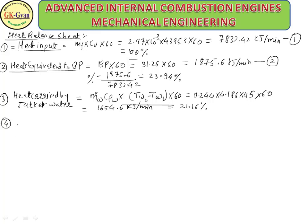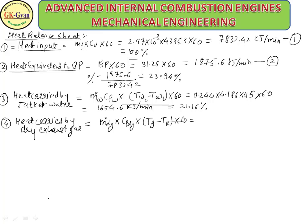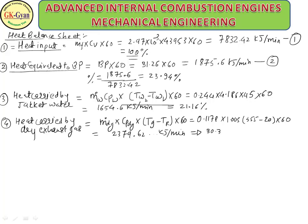Fourth, heat carried by dry exhaust gas = m_DG × Cp_DG × (Tg − TR) × 60 = 0.1178 × 1.005 × (355 − 20) × 60 = 2379.62 kJ/min. Percentage = 30.38%.